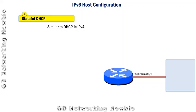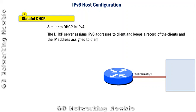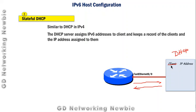The second method is stateful DHCP. It is similar to DHCP in IPv4. Here, the DHCP server assigns an IPv6 address to the client. The router makes a request and the DHCP server sends back an IPv6 address. Importantly, the DHCP server keeps a record of the client and the IPv6 address that has been assigned — recording client information and their assigned IPv6 address. This is why we call it stateful DHCP.